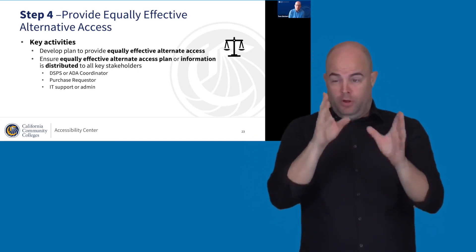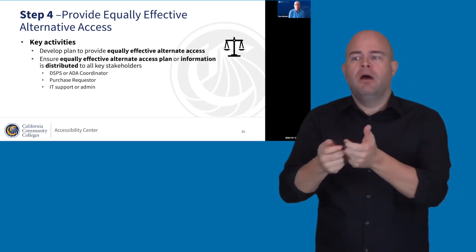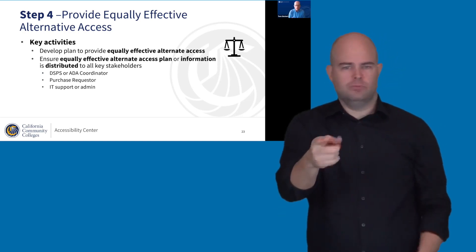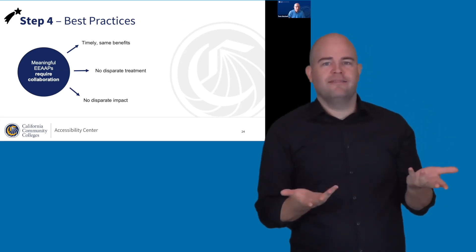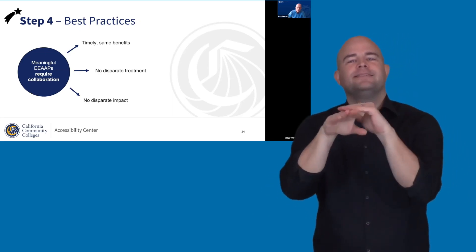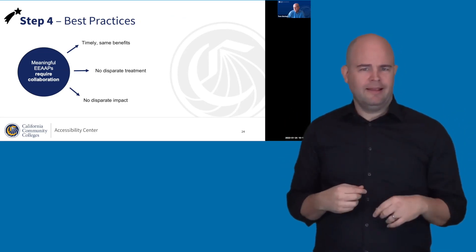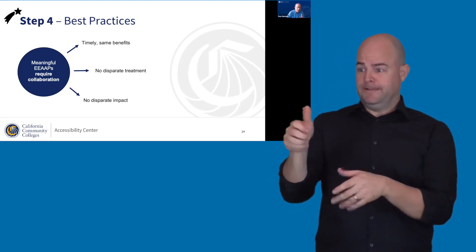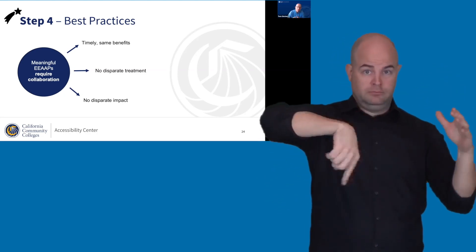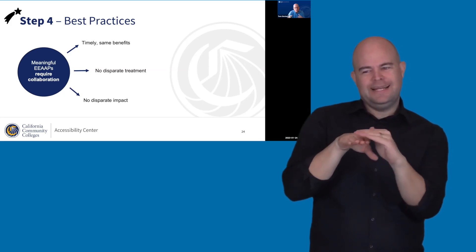Once the plan is created, it's really important to distribute it. I've seen colleges come up with a plan but not disseminate it to all the people who need that information — such as the disability services office, the purchase requester, the person implementing the technology, or the IT support team. Creating these equally effective access plans requires collaboration and cannot be done in isolation — not even by just an accessibility expert. It requires a multidisciplinary group. For instructional software, that must involve the faculty members, because only those subject matter experts can tell you whether the alternate means of access meets the same course learning objectives.